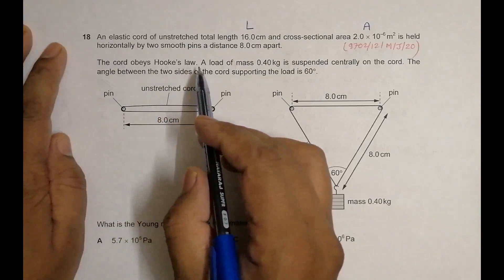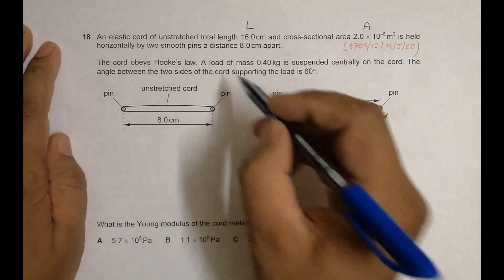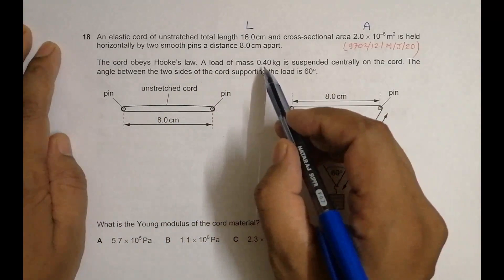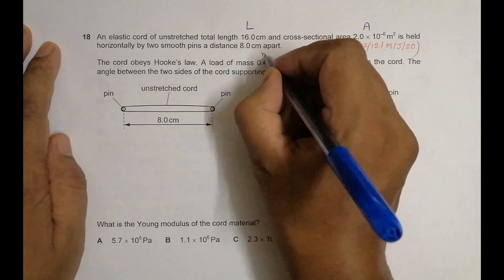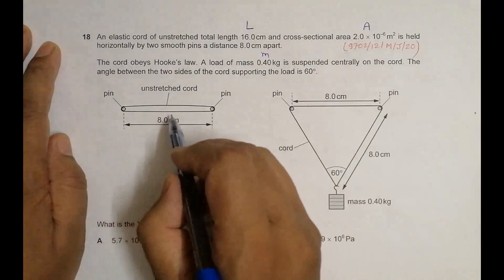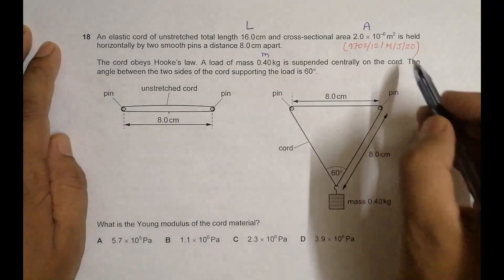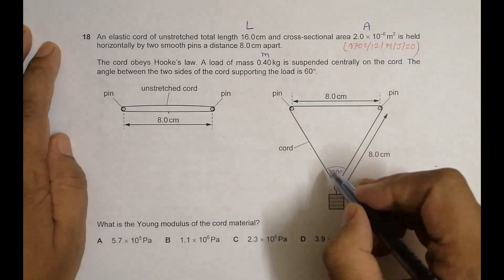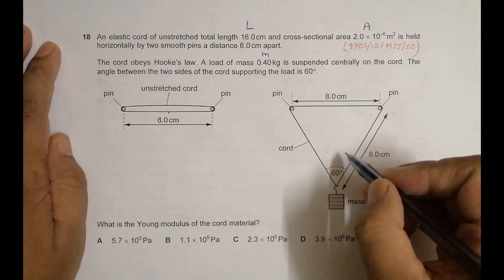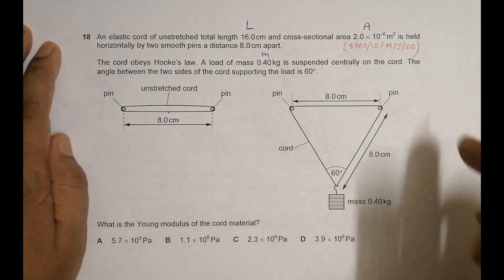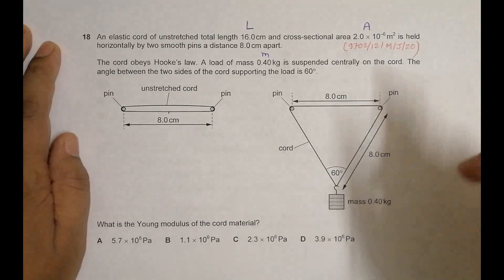The cord obeys Hooke's law. A load of mass 0.40 kg is suspended centrally on the cord. After suspension, the angle between the two sides of the cord supporting the load is 60 degrees. We need to find the Young's modulus of the cord material.